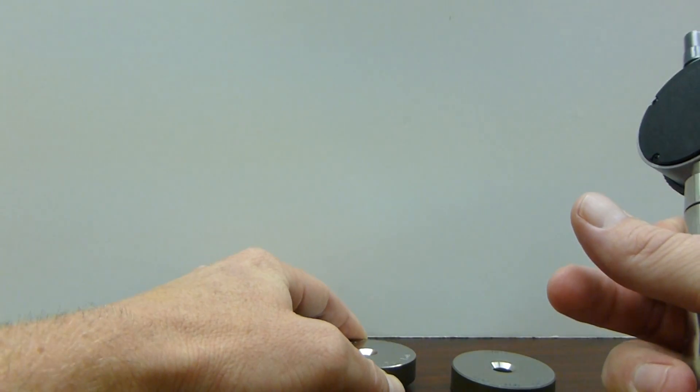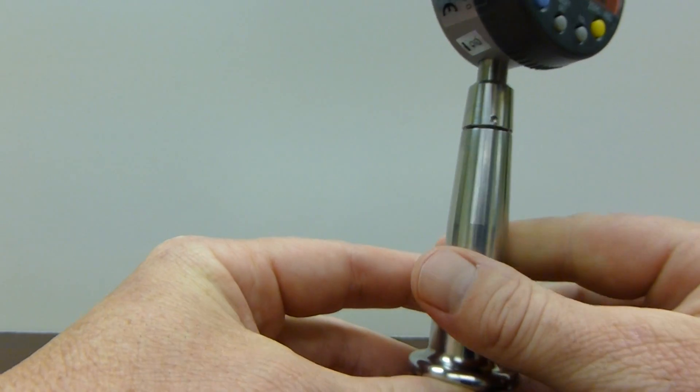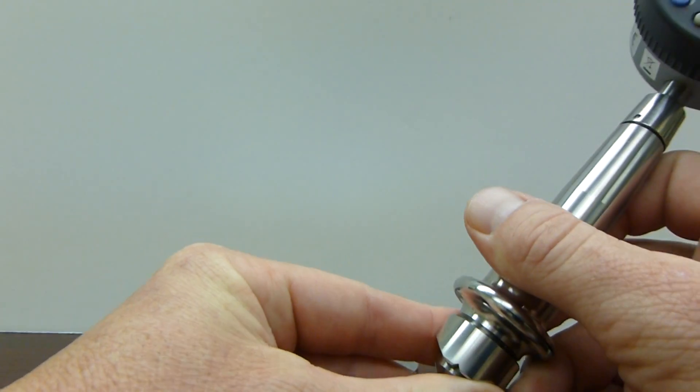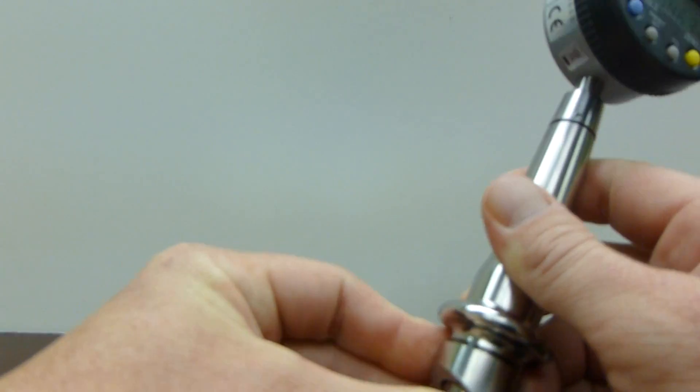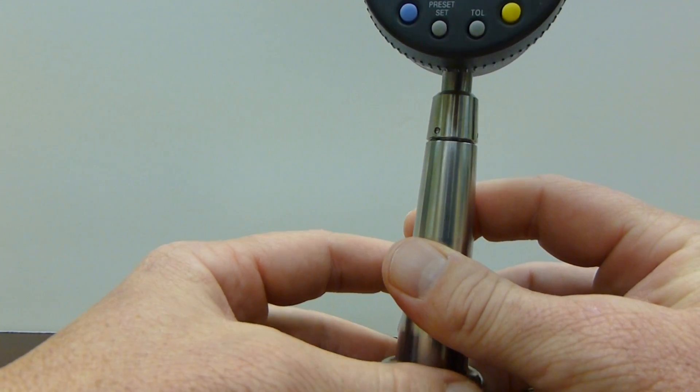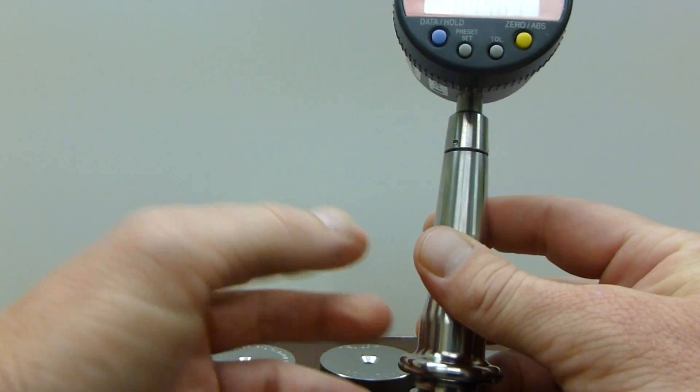The countersink diameter of our set blocks have a tolerance of plus 3 ten thousandths of an inch minus 1 ten thousandth of an inch from nominal, and the angle is plus zero decimal degrees minus 0.2 decimal degrees. These measurements are achieved by a ball over method which calculates the diameter of our blocks to the ten millionths of an inch.